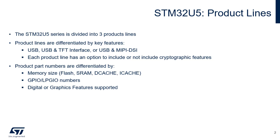The STM32U5 series is divided into three product lines: USB, USB and TFD interface, and USB and MIPI DSI. Each product line has an option to include or not include cryptographic features.